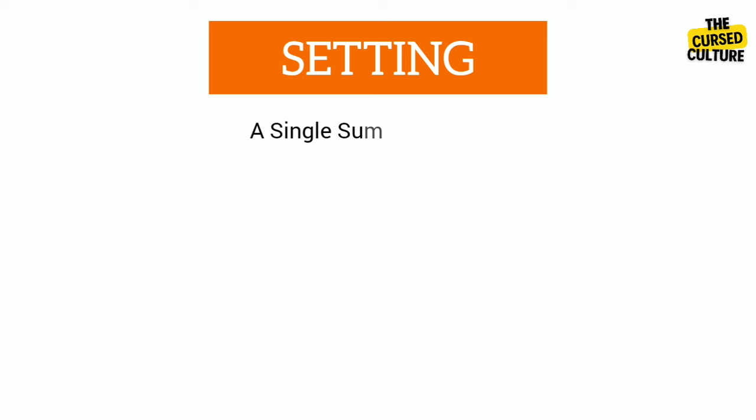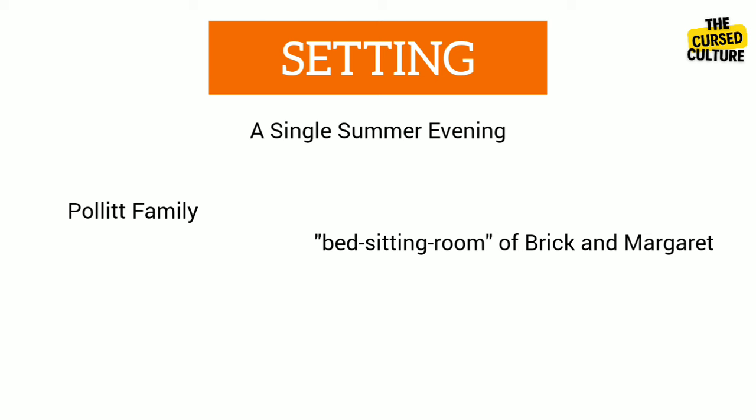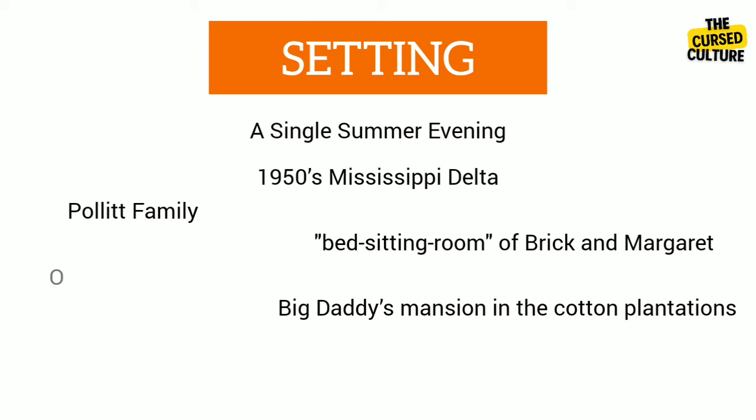The play is set over a single summer evening where the Pollitt family gathers in the bed-sitting room of Brick and Margaret to celebrate the patriarch's birthday at his mansion in the cotton plantations in the 1950s Mississippi Delta. The Old South's decline can be referenced through Big Daddy's looming death due to cancer.